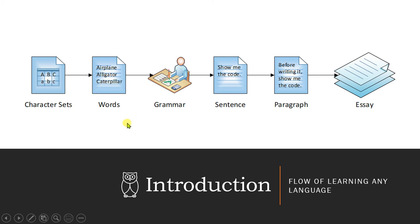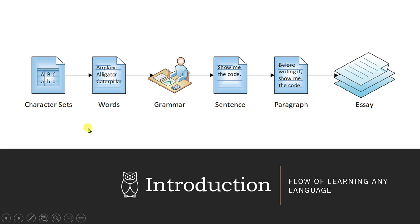Whenever you are learning any programming language, or even a common language like your native language or English, you must follow a structure. You start learning the alphabets, then words, then you make a sentence — which requires grammar so others can understand it. A collection of sentences makes a paragraph, and paragraphs make an essay. Similarly, to learn C and interact with a machine, we need to follow this same flow.